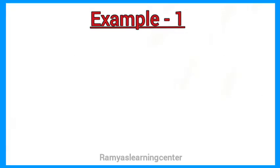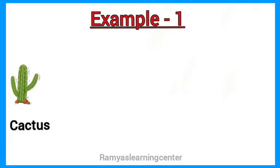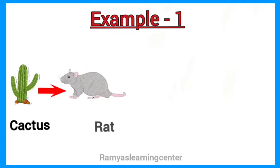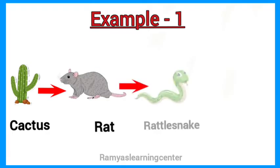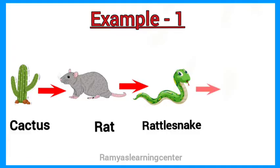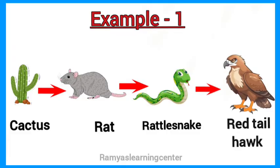It can be shown like this. First, cactus. The cactus is eaten by the rat. The rat is eaten by the snake. The snake is eaten by the hawk.